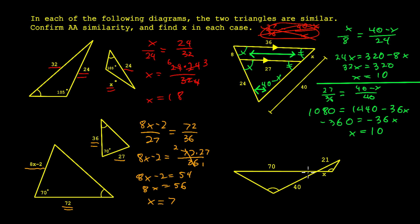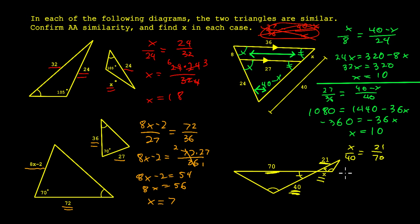Now the bottom right. We have one set of tick marks but not another; however, we can recognize that these two angles are vertical angles, giving us a second set of congruent angles. So we have AA similarity. Across from the one tick mark in the big triangle is 70, and across from the one tick mark in the small triangle is 21. Between the two tick marks on the big triangle is 40, and between the two tick marks on the small triangle is X. So X over 40 equals 21 over 70. Rearranging, X equals 21 times 40 over 70. Reducing gives 4 over 7, and 21 over 7 is 3, so X equals 3 times 4 equals 12.